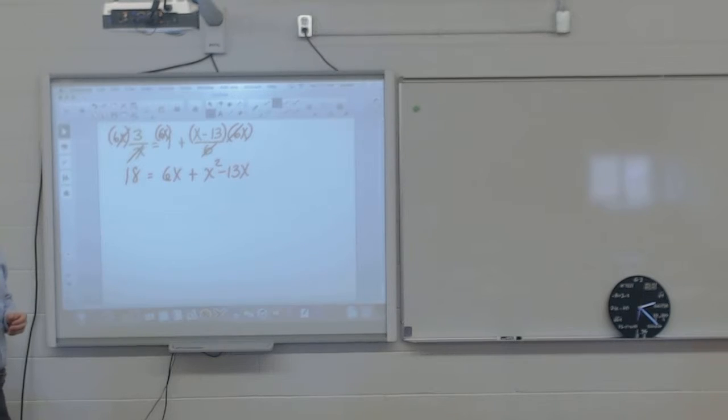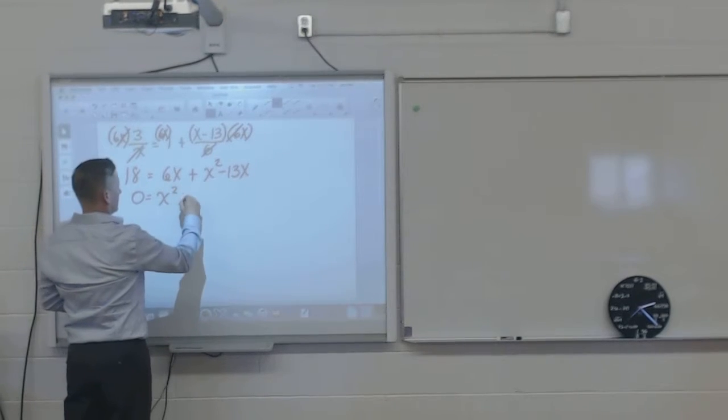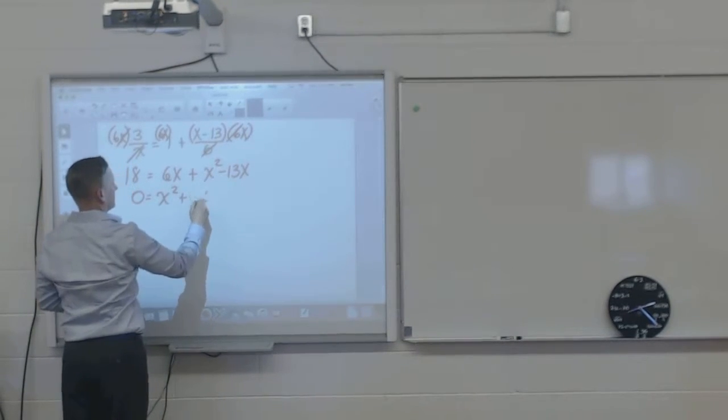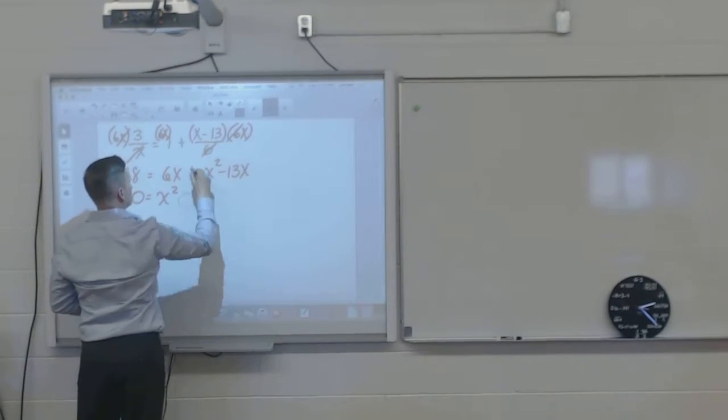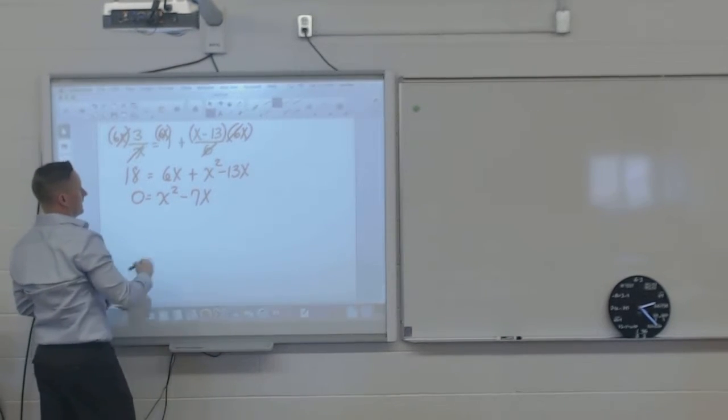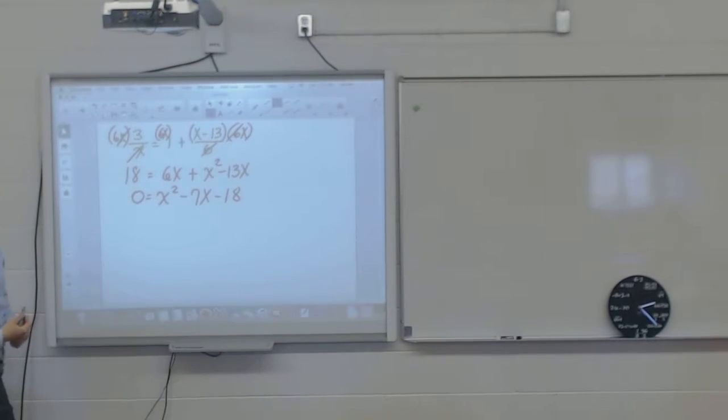Okay, so far so good. What do I do at this point, now that I have a quadratic? Put it to 0. That it equals 0. 0 is equal to x squared plus 6x. No, sorry. That would be minus 7x. Right? And then subtract 18.